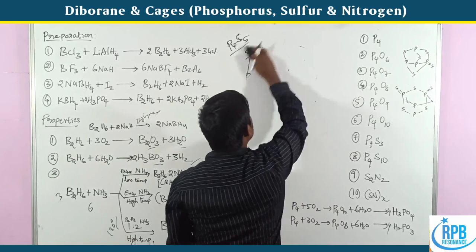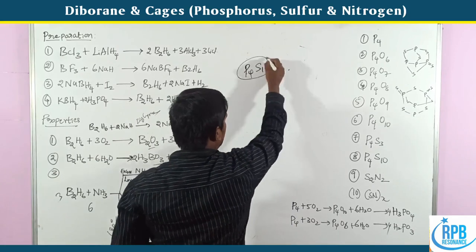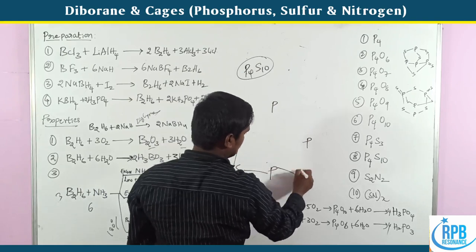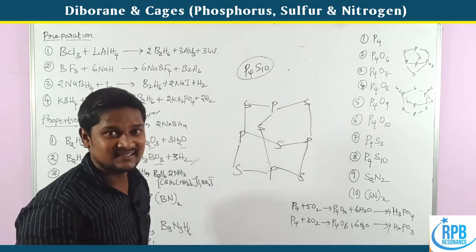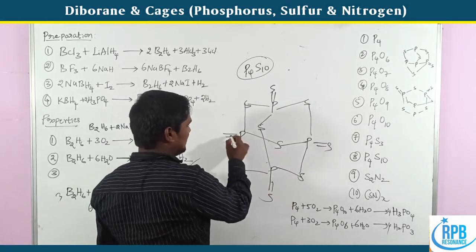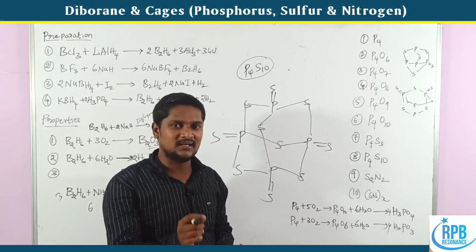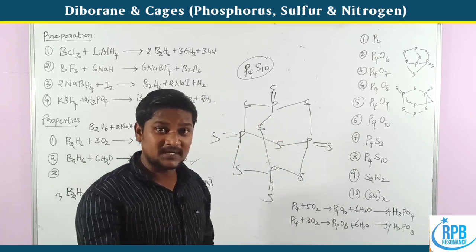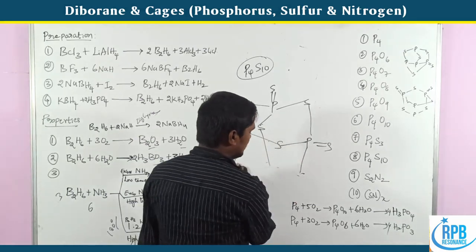Now P4S10: similar to P4O10 in structure. P4S10 has 4 P=S double bonds (terminal) and the bridging P-S-P bonds. Calculation of P-S bonds is important. This is the structure of P4S10.